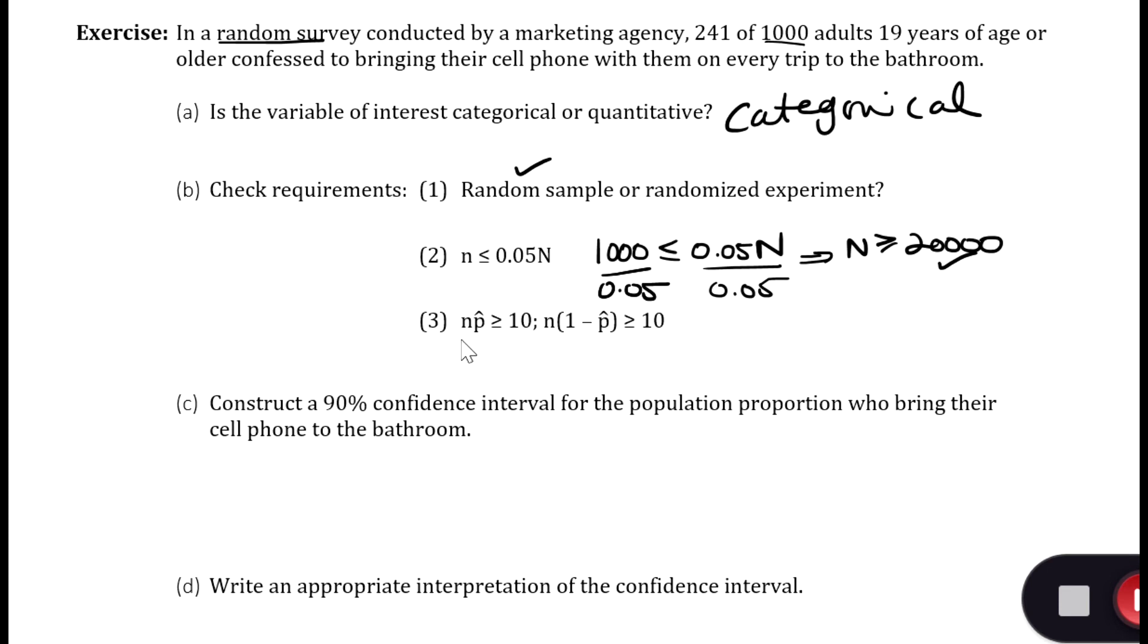Next criteria is that n times p-hat is greater than or equal to 10, and n times 1 minus p-hat is greater than or equal to 10. So we have to find out what p-hat is. P-hat is my sample proportion.